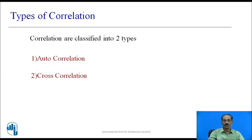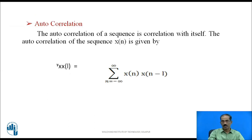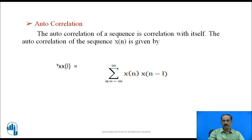There are two types of correlation: one is autocorrelation and the second one is cross-correlation. Autocorrelation of a sequence is the correlation with itself. The autocorrelation of sequence x[n] is given by ρ_xx[l] = Σ (n = -∞ to ∞) x[n] · x[n - l]. In autocorrelation, we have only one sequence and we need to take the time reversal of it — that is the flipped version of x[n], which is x[n - l].